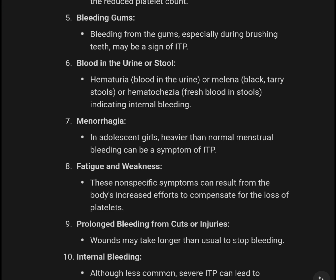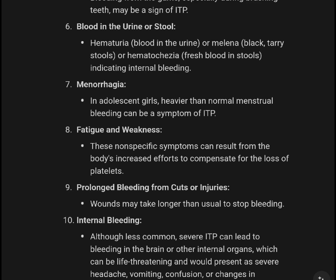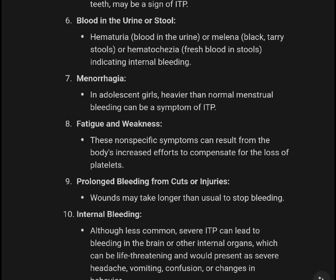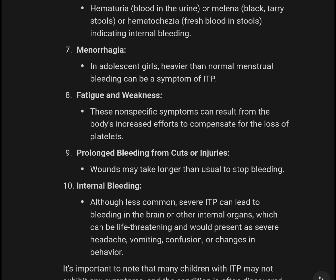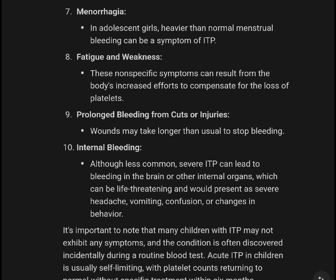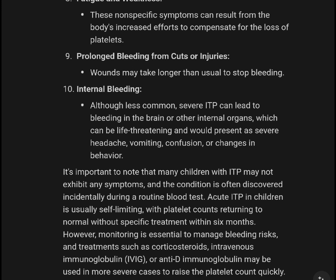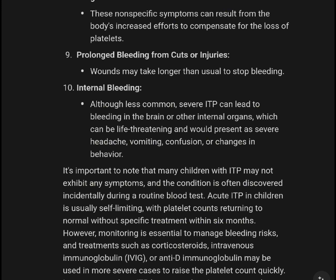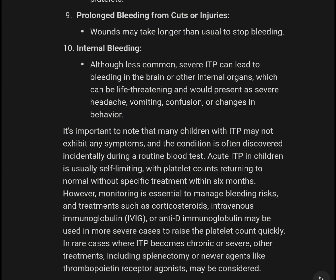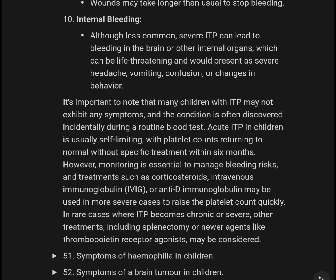Bleeding gums, especially during tooth brushing, may be a sign of ITP. Blood in the urine (hematuria) or stools (melena or hematochezia) can indicate internal bleeding. Menorrhagia — heavier than normal menstrual bleeding — can be a symptom. Fatigue and weakness are non-specific symptoms resulting from the body's increased effort to compensate for blood loss. Prolonged bleeding from cuts or injuries may occur. Although less common, ITP can lead to intracranial hemorrhage, presenting with severe headache, vomiting, confusion, or changes in behavior.